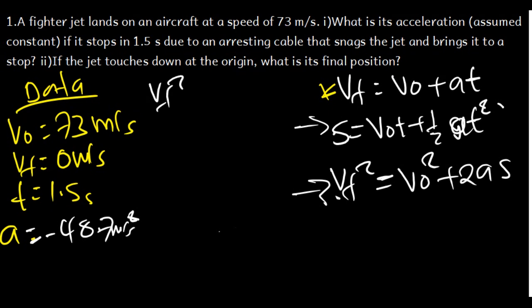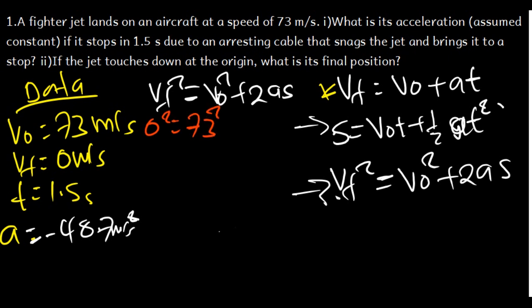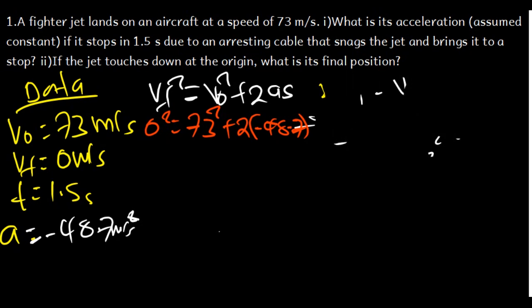The third formula is V_final² = V_initial² + 2as, and we are trying to find s. Plugging in the values: 0² = 73² + 2 × (−48.7) × s. We shift the 73² term to the other side: −73² = 2 × (−48.7) × s, which gives us −73² = −96 × s. Dividing both sides by negative 96, we can solve for s.